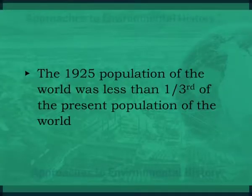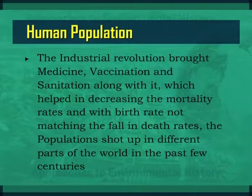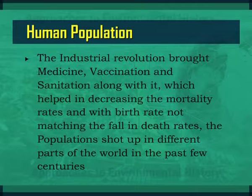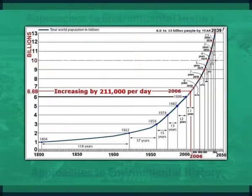Also, the 1925 population of the world was less than one third of the present world population. As the industrial revolution spread from the continent of Europe to North America initially and then to other continents, the population of respective continents began to swell as well. The industrial revolution brought medicine, vaccination and sanitation along with it, which helped in decreasing mortality rates. With birth rates not matching the fall in death rates, the population grew rapidly. This increase, if fixed to the rate of increase of 2006, means the world could have a population of more than 13 billion by the year 2040.